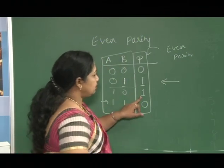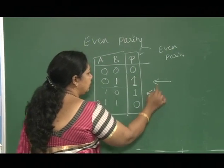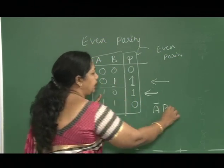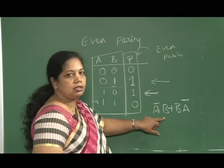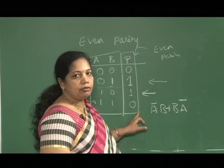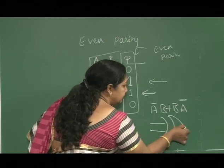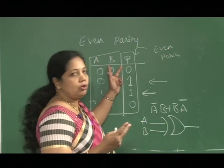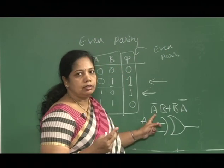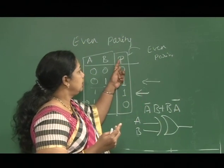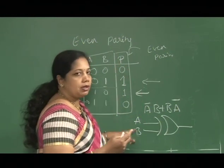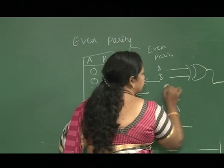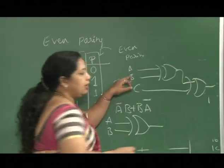How do we generate this parity? Wherever there are 1s, you write the equation and you get A complement B and B complement A — which is XOR gate, as we discussed. For 2 inputs, the XOR gate generates the 2-input parity bit. If we consider 3 bits, similarly we get A XOR B XOR C. As the number of bits increases, so does the XOR gate.